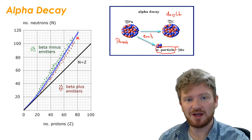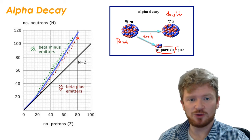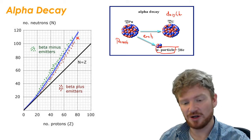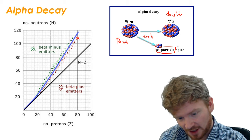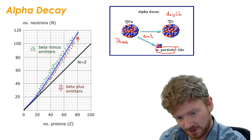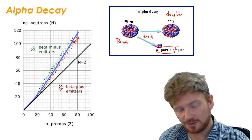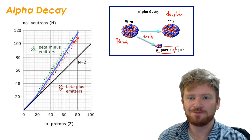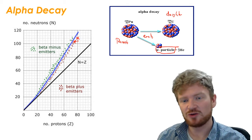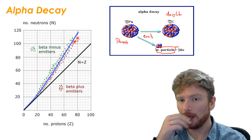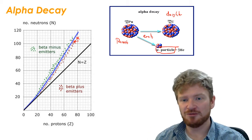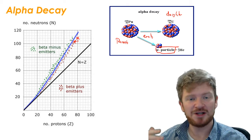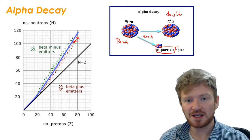So on this graph, it's going to have dropped down by 2, and it's going to have dropped down by 2 in this direction. So you can see that my element has taken itself a little bit closer to that stability curve. It just got slightly closer to it. And over time, by doing lots of different types of decay, it can eventually find itself on the blue line. And when it does find itself on the blue line, it will be stable.